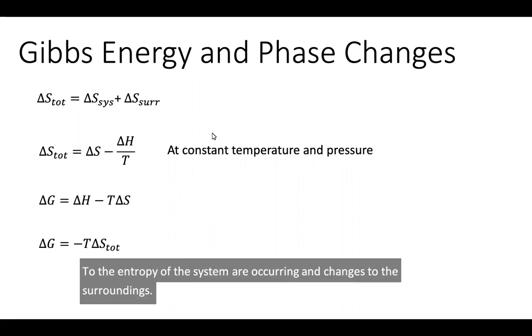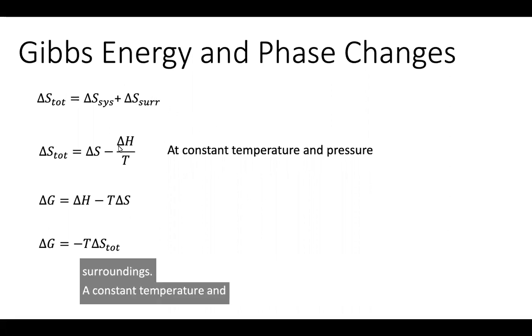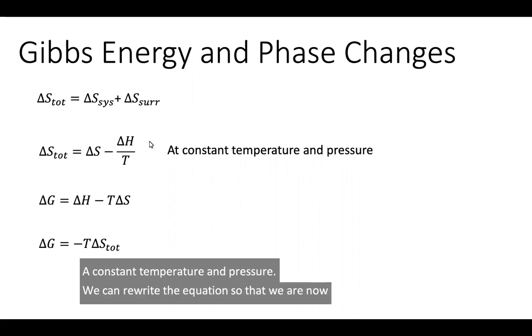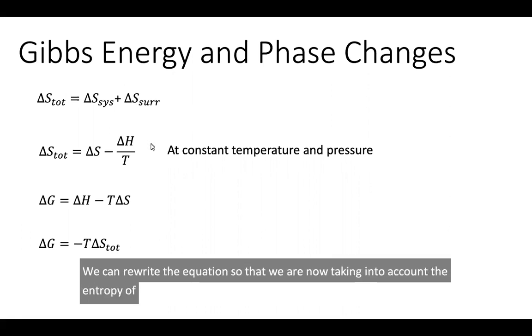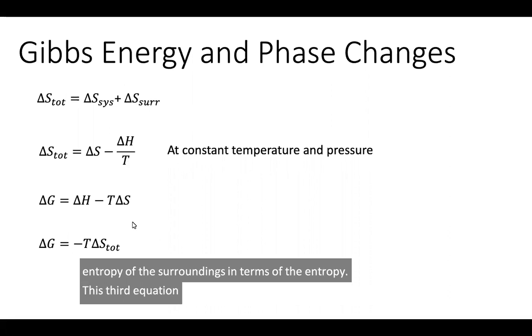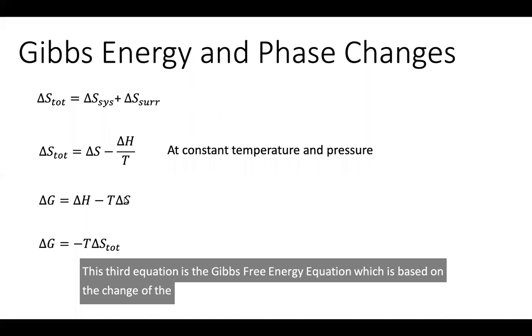At constant temperature and pressure, we can rewrite the equation so that we are now taking into account the entropy of the surroundings in terms of the enthalpy. This third equation is the Gibbs free energy equation, which is based on the change of the enthalpy and the entropy at the temperature that we're dealing with for all of this.